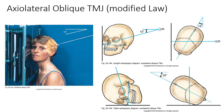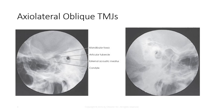The CR should be angled 15 degrees caudal, and enter at a point approximately 1.5 inches superior and 1.5 inches posterior to the EAM side up, while exiting the TMJ side down. Collimate to a 3 by 3 inch field size. The closed mouth view on the left should demonstrate the condyle lying within the mandibular fossa, while the open mouth view on the right should demonstrate the condyle lying inferior to the articular tubercle, if normal.